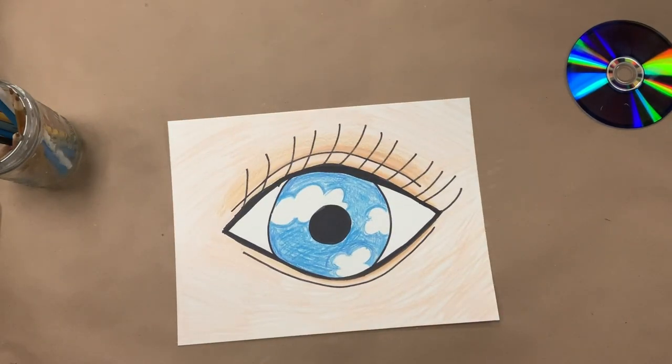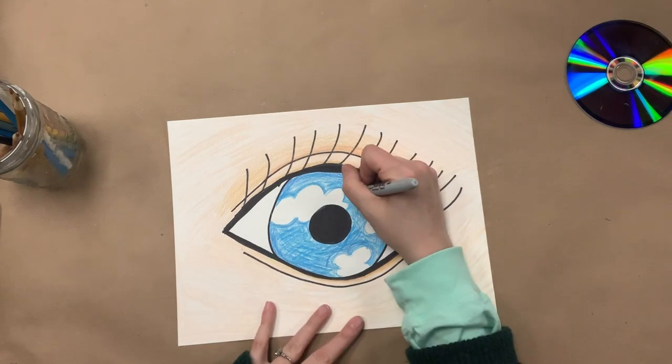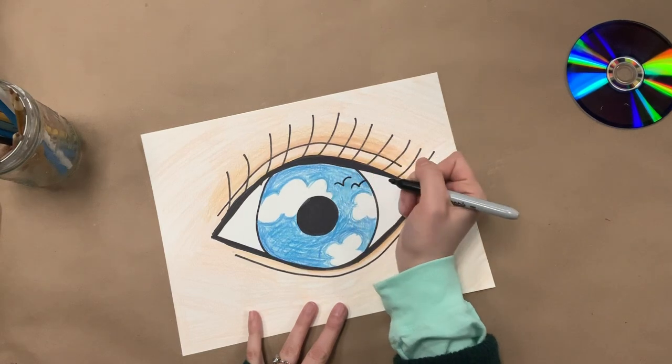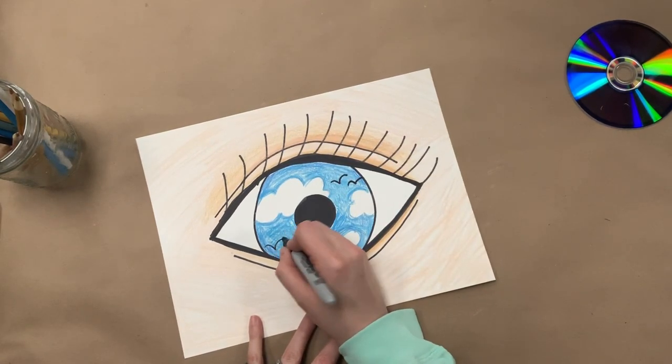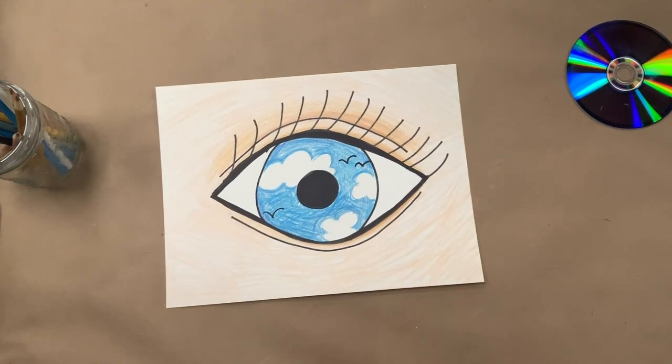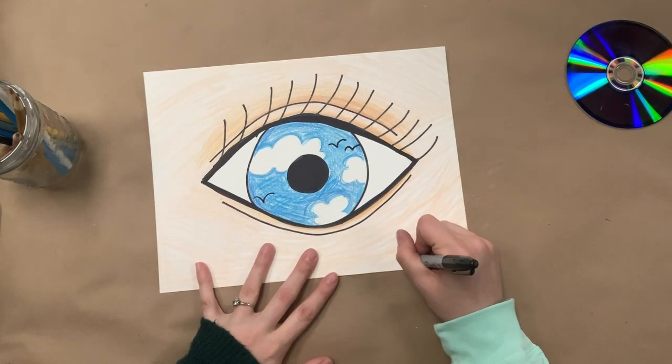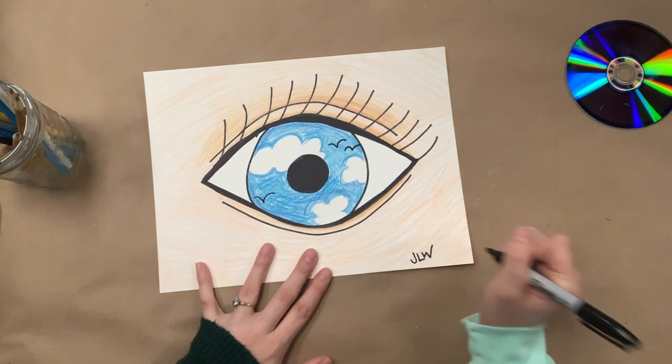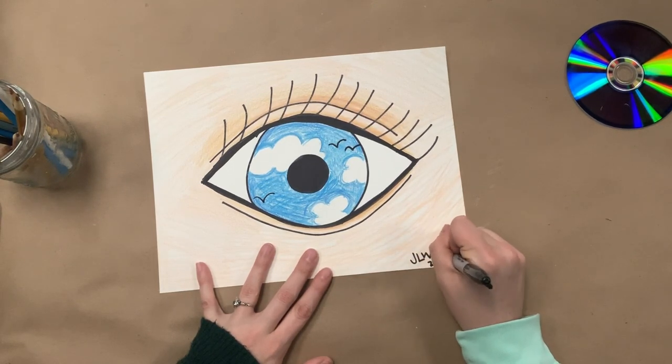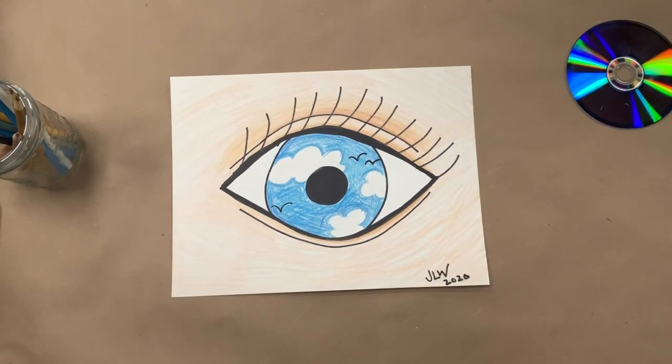I've colored in the inside of my eyeball. I have a blue sky with clouds. I'm dreaming about the day that I can go outside into the park with all my friends. And the last thing I'm going to do is I'm going to add with my Sharpie marker, I'm just going to put some birds in the sky. I'm going to sign my name right at the bottom. It's always important to sign our artwork. I'm going to put the year. And we're all done.